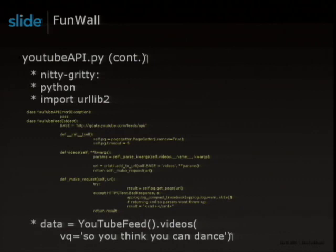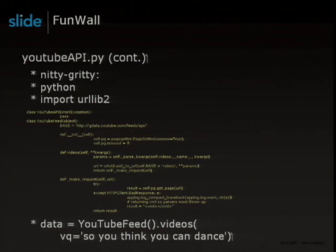For talking to YouTube servers, we're a Python shop — we love Python. We have this YouTube feed object written in Python. It's a collection of methods that take parameters to generate URLs and make requests out to YouTube servers. YouTube servers respond, we handle that response and return the results. There's a code snippet for videos where we take the params, generate a URL, and make the request out. Below is an example of instantiating a YouTube feed object and calling the 'videos' method passing the parameter 'so you think you can dance' for a keyword search.